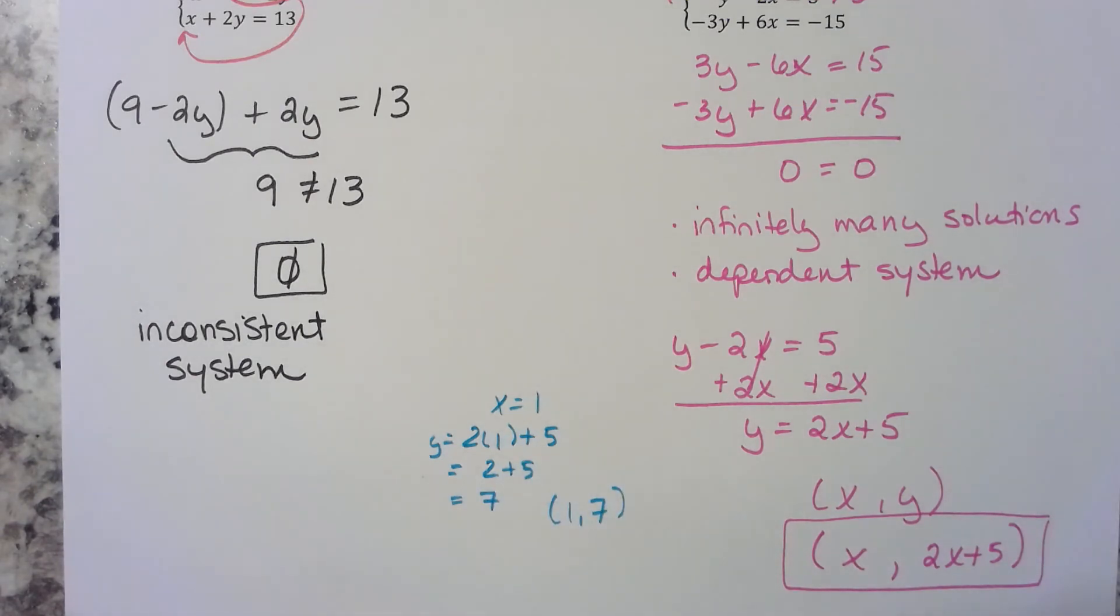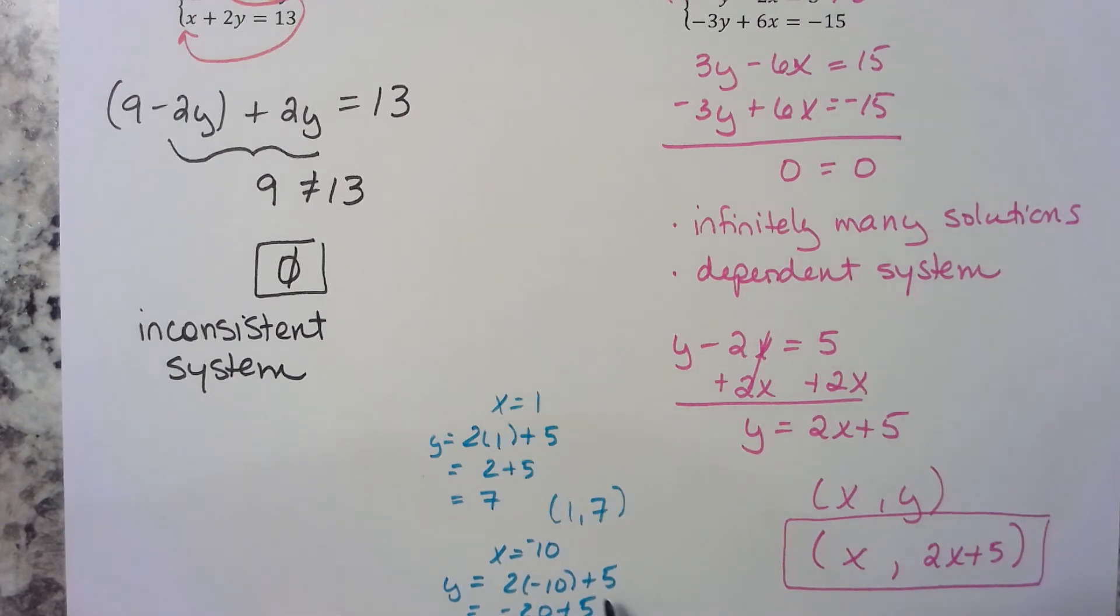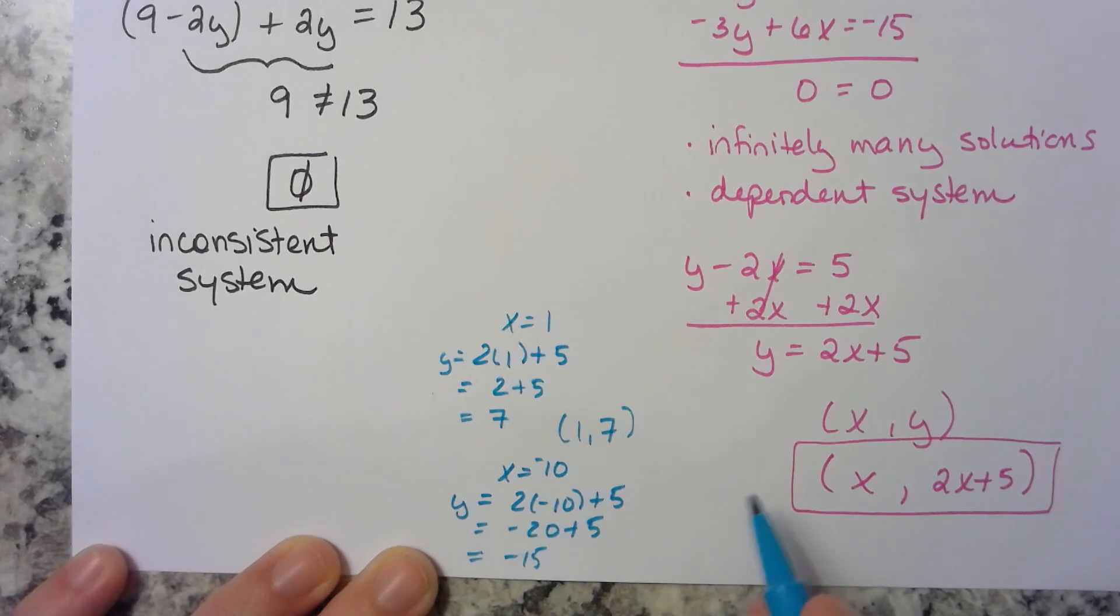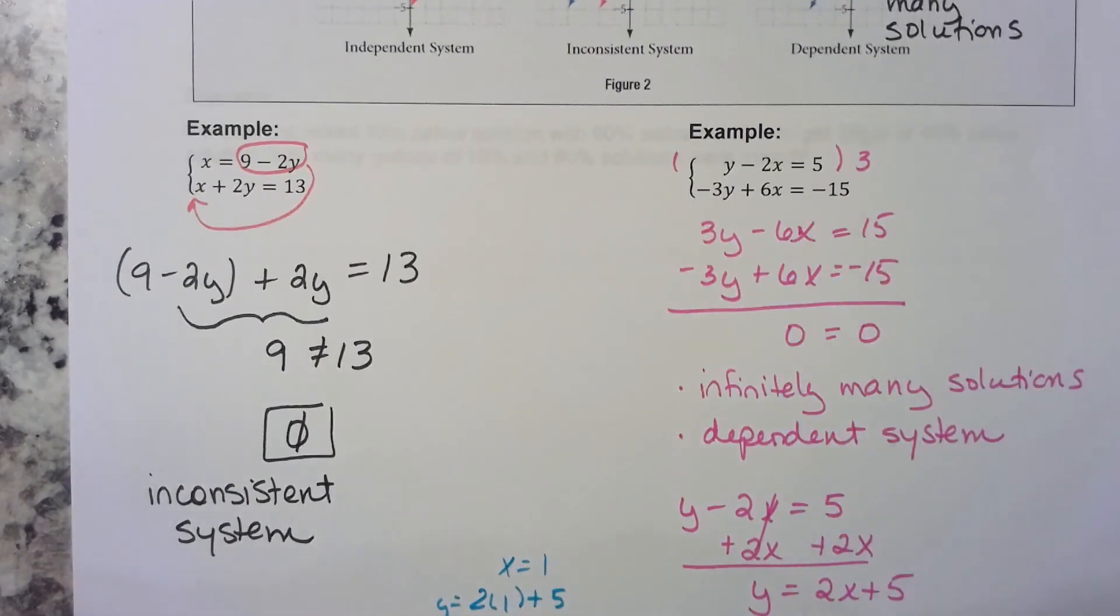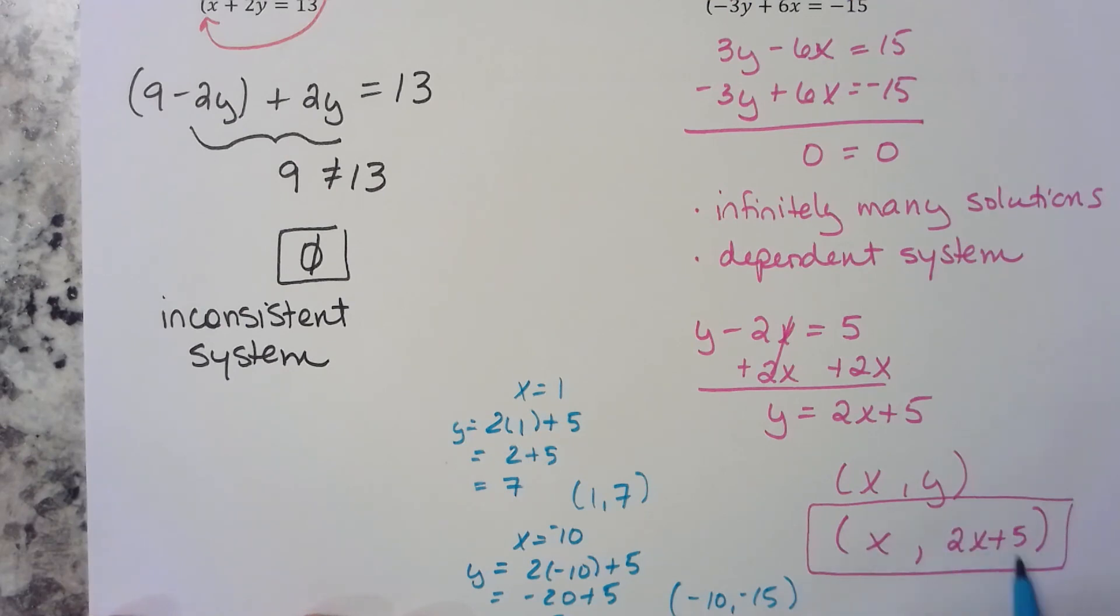You could pick some other random x, like x equals negative 10 if you wanted to. Substitute that in for your y value. So y is equal to 2 times negative 10 plus 5. That's going to be negative 20 plus 5 or negative 15. So negative 10, negative 15 is also a solution for that system. And you could do this all day long for the rest of your life. As long as you keep picking x values, substitute them in here for your y, you can find an ordered pair that satisfies the system. So this particular ordered pair represents all of those that we could possibly find.